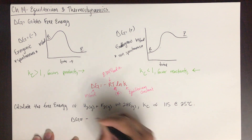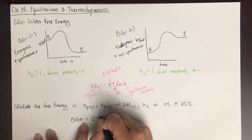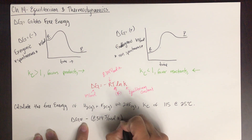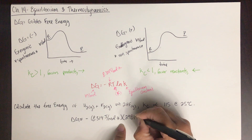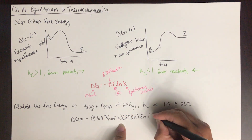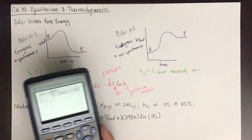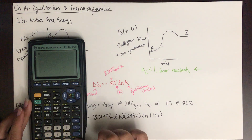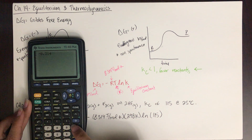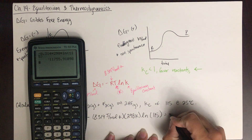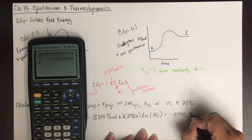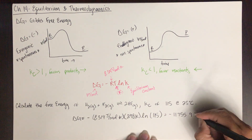Delta G equals negative R times T times ln K. Plugging in: negative 8.314 joules per mole Kelvin, times 298 Kelvin — since 25 degrees Celsius plus 273 equals 298 K — times the natural log of 115. Calculating this gives negative 11,755.9. Kelvin cancels, leaving units of joules per mole.